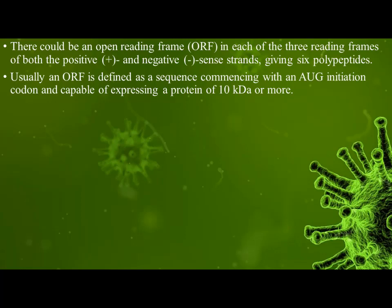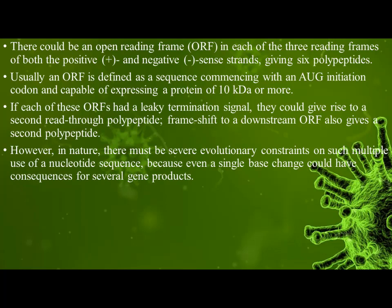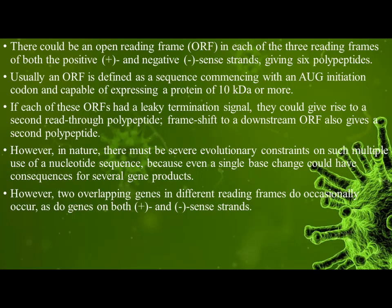If each of these ORFs had a leaky termination signal, they could give rise to a secondary polypeptide. A frameshift to a downstream ORF also gives a second polypeptide. However, in nature there must be severe evolutionary constraints on such multiple use of nucleotide sequence, because even a single base change could have consequences for several gene products. Two overlapping genes in different reading frames do occasionally occur, as do genes on both positive and negative sense strands.